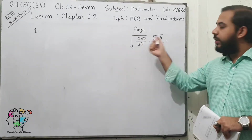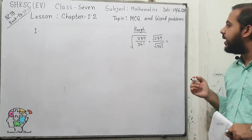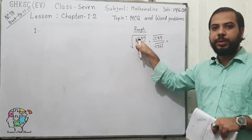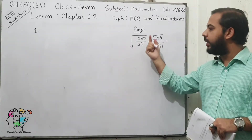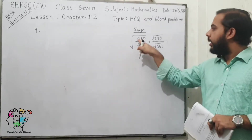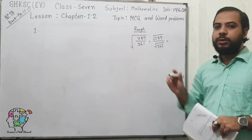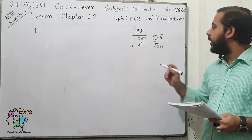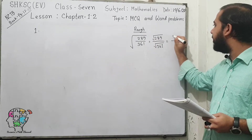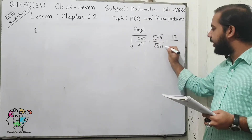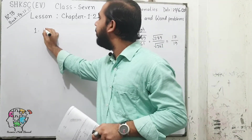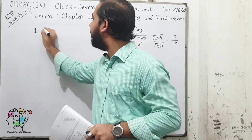From our previous classes, you learned how to find the square root of any perfect square number. Following those rules to find the square root of 289, the answer will be 17 divided by 19. So the answer will be option B for question number 1.